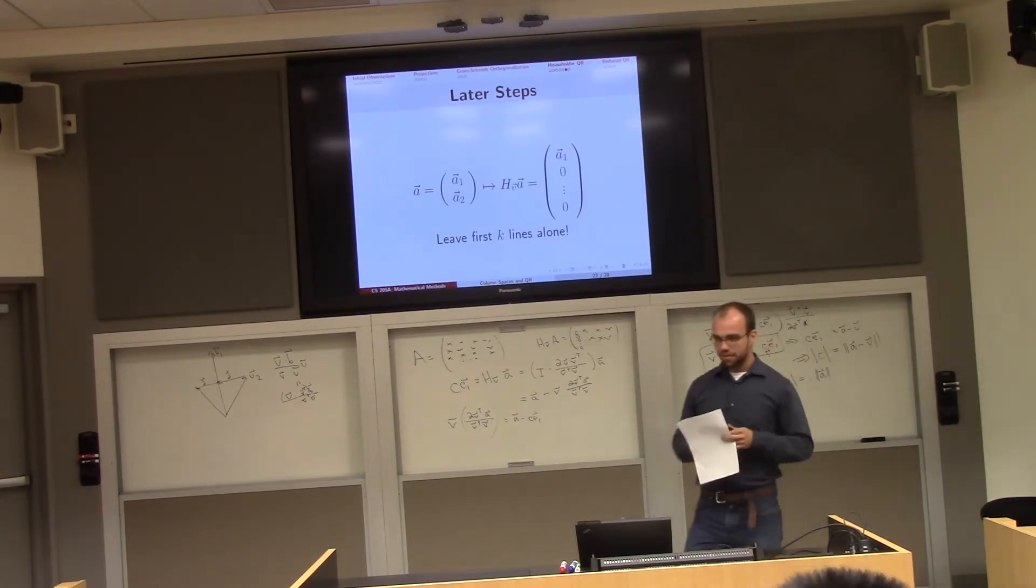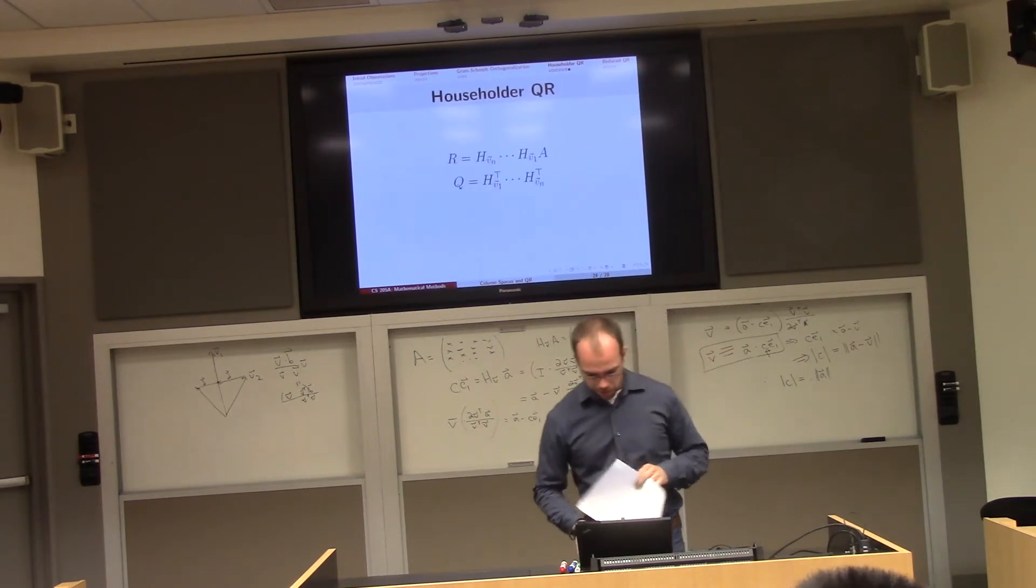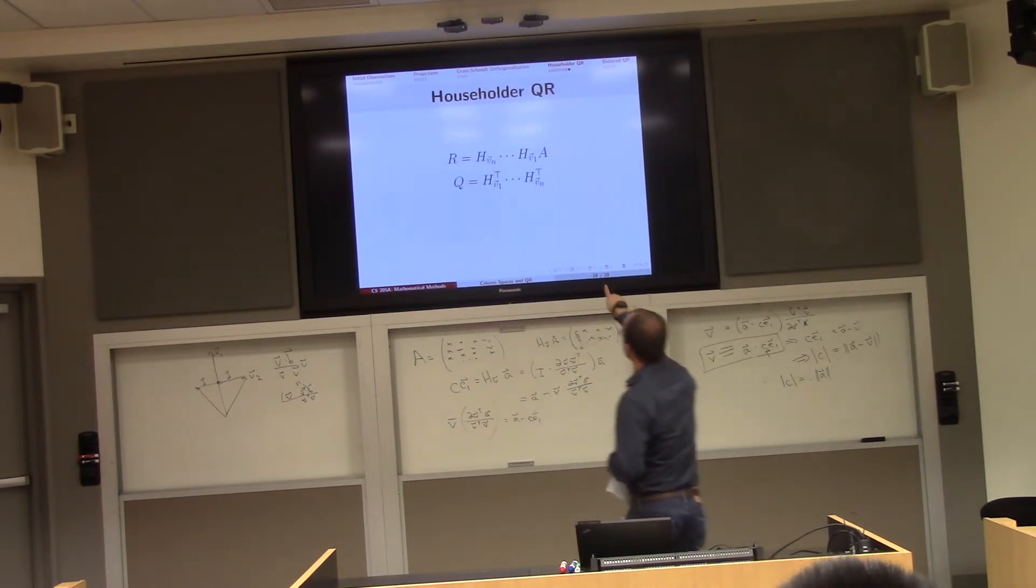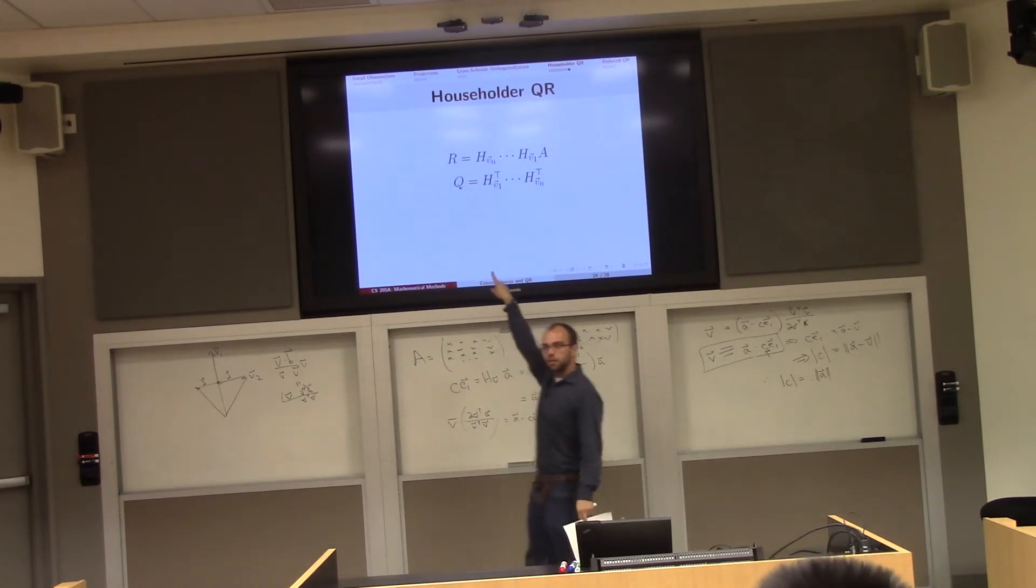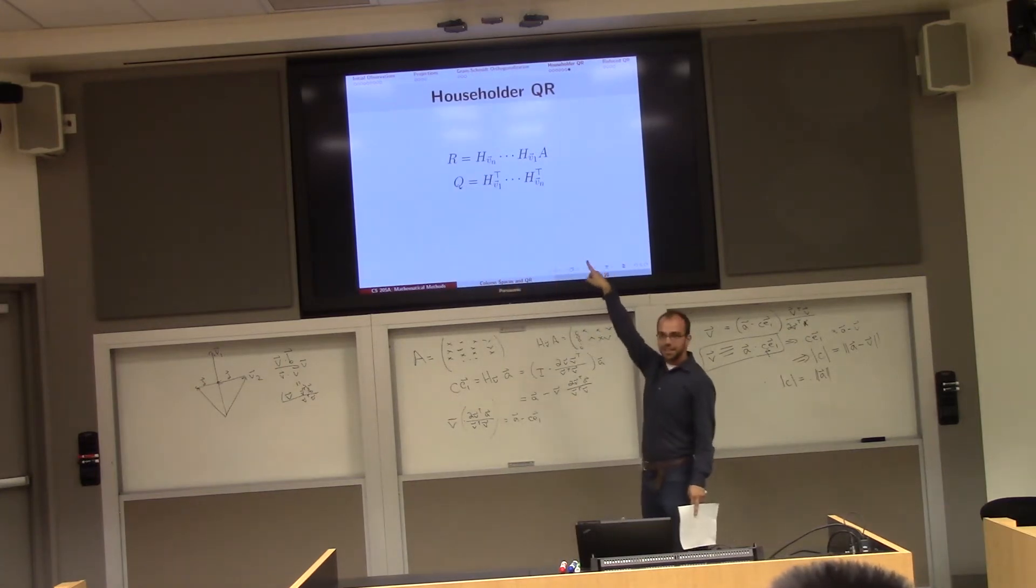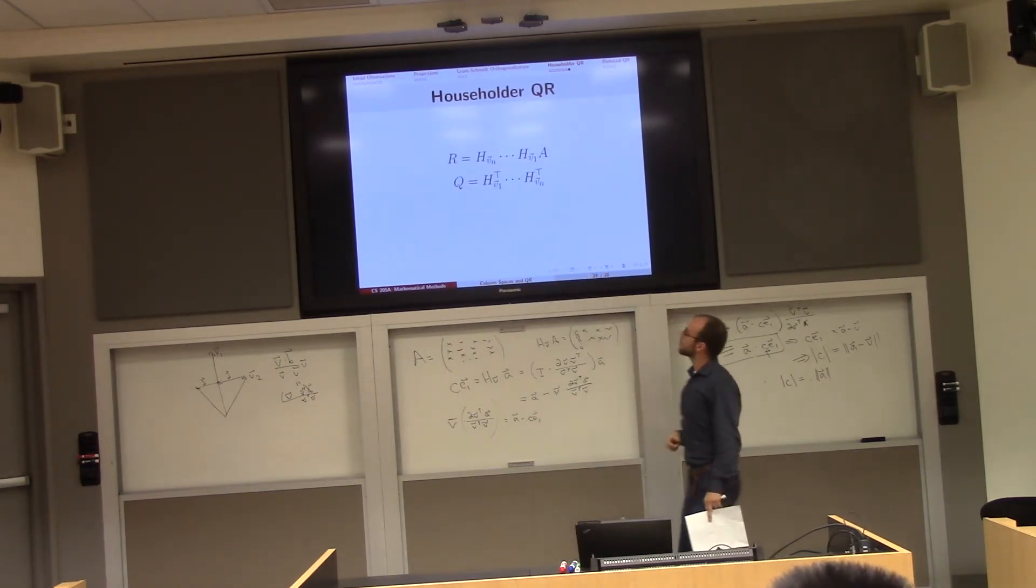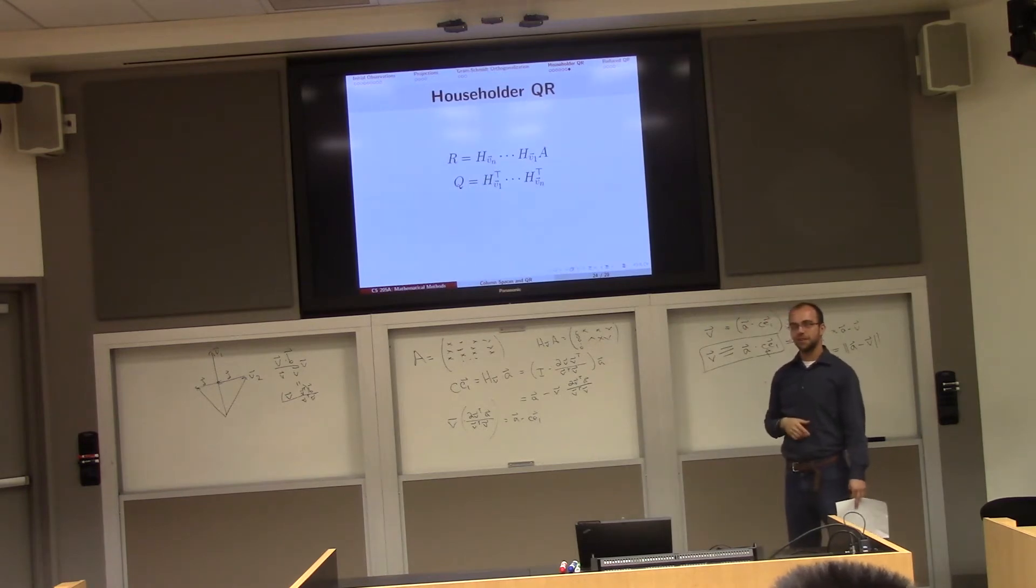So in the end what happens? Well, remember when we're done with this process we get something upper triangular we'll call that R, and we did that by reflecting over a bunch of different vectors V. And of course we know that the inverse of an orthogonal thing is just its transpose.